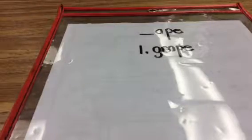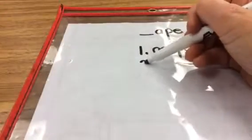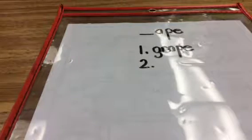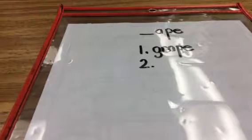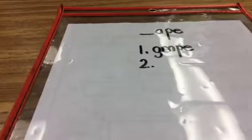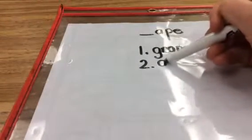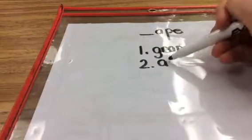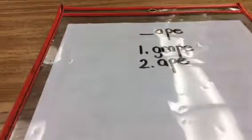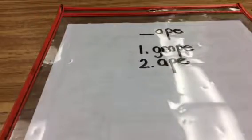Number 2, try to spell ape. The ape was at the zoo. That's just A-P-E. It doesn't have any letter in front of it.